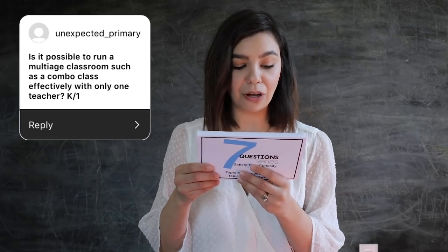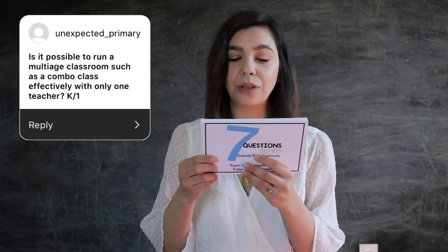Question number two: Is it possible to run a multi-age classroom such as a combo class effectively with only one teacher — so a K-1 combo? Absolutely. You are a multi-age teacher already. We are all multi-age teachers, and this is the point I want to drive home. Think about your classrooms right now — the levels of your students academically. You're going to have those kids that are right on grade level, those below grade level maybe working one or two grades below, and then those kids that are striving and above grade level. You are already doing what I am doing in my classroom. As I go along in this video, you're going to find some tips and strategies that will really help you see how to implement this into your own classroom.